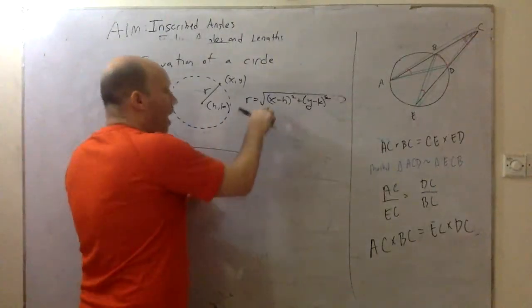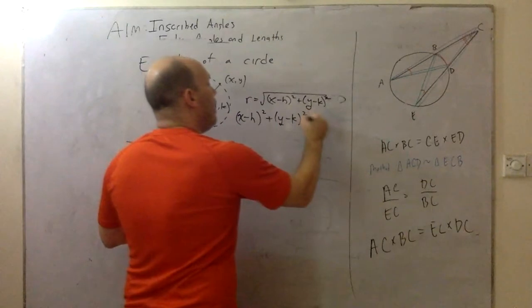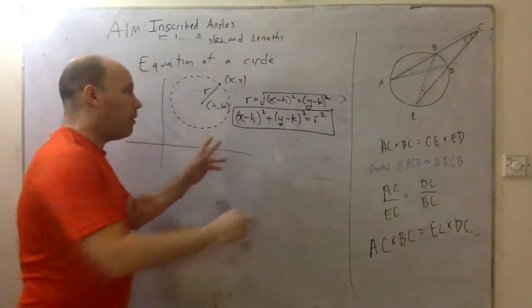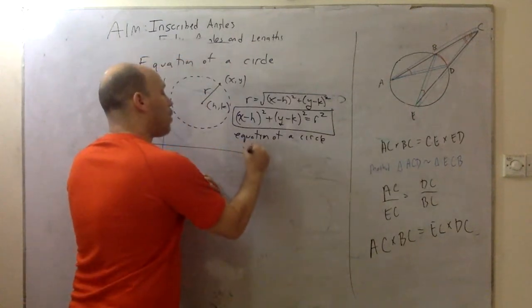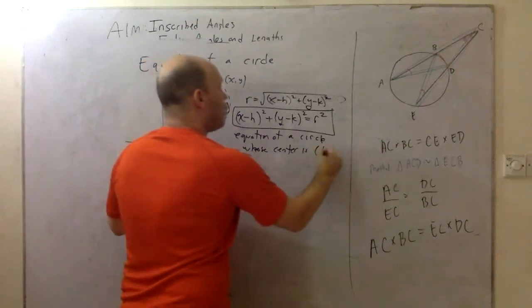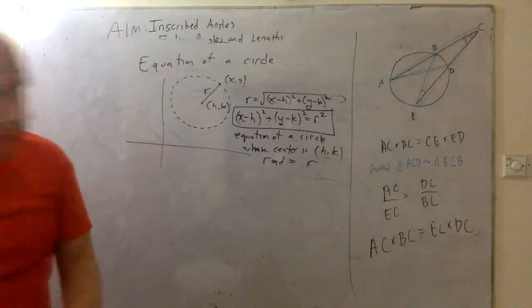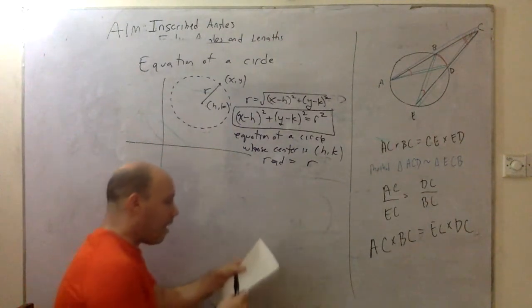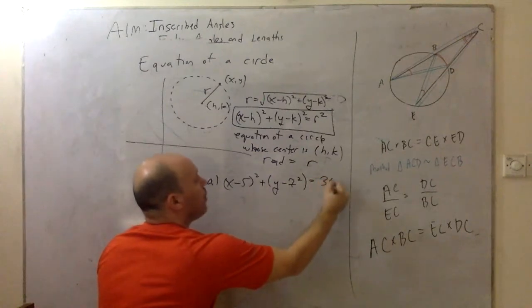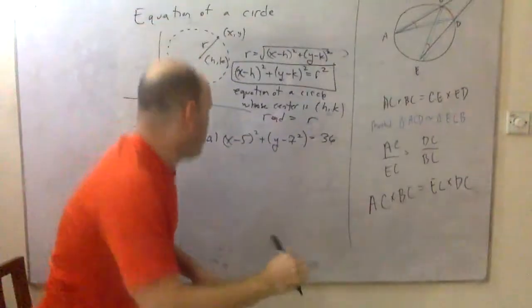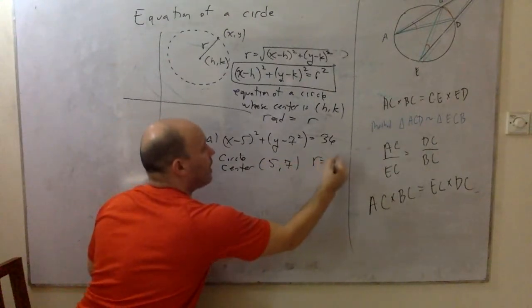And so, I could say, how do I undo a square root? You squared. And so we've got this formula. So (x minus h) squared plus (y minus k) squared is equal to r squared. And this is the equation of a circle. This is the equation of a circle whose center is h,k with a radius of r. And so let's just do three problems. For example, I give you this equation: (x minus 5) squared plus (y minus 7) squared equals 36. You say, okay, Mr. Radler, that's a circle. The center is (5,7), and the radius is 6. Good.